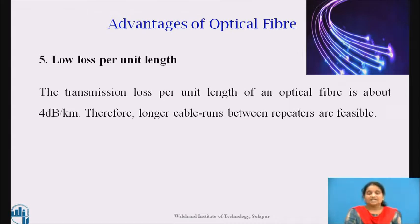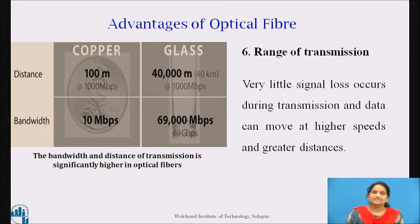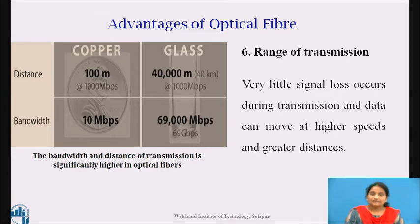The next advantage is low loss per unit length. The transmission loss per unit length of an optical fiber is about 4 dB per kilometer, making longer cable runs between repeaters feasible. If copper cables are used, repeaters need to be spaced at intervals of about 2 km. In the case of optical fiber, the intervals can be as large as 100 km and above. Since data travels in the form of light in an optical fiber cable, very little signal loss occurs during transmission and data can move at higher speeds and greater distances. Copper cables are limited to lengths of 100 meters per governing standards.